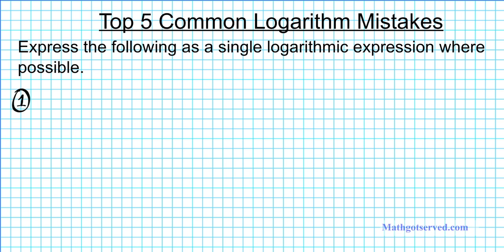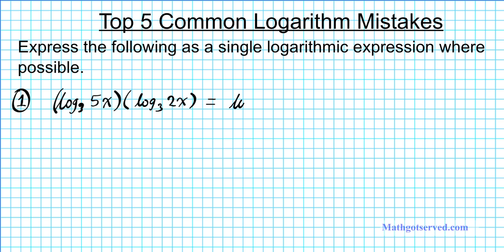Let's take a look at problem number one. What if you have the expression log base 3 of 5x multiplied by log base 3 of 2x? A common mistake is to say: since this is a product of two logs with the same base, I can write this as log base 3 of 5x plus 2x, which simplifies to log base 3 of 7x. Obviously, this is the wrong answer.